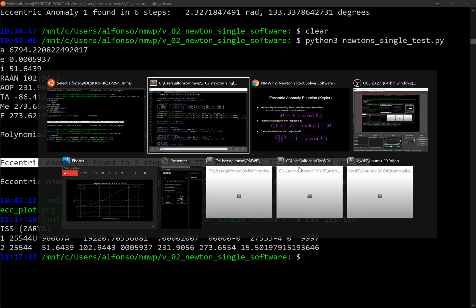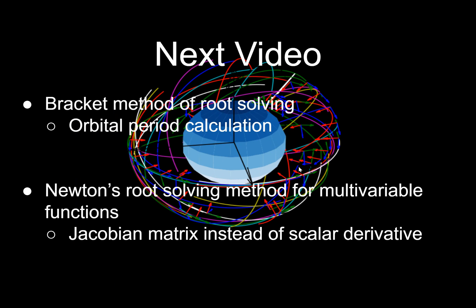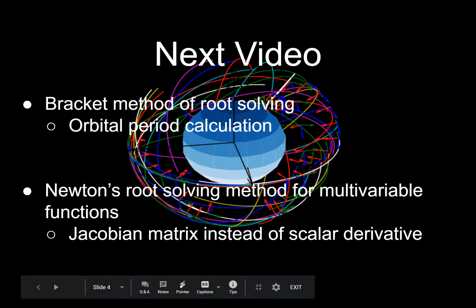That's pretty much it for this video. Let me know if you have questions in the comments, and give me a thumbs up to help with the YouTube algorithm. For the next video in the series, you can vote on two options: the bracket method for root solving, where you use upper and lower bounds converging on the solution, or Newton's root-solving method extended to multivariable functions using the Jacobian matrix instead of a scalar derivative. Both are interesting — let me know what you want to see, and thank you for watching.